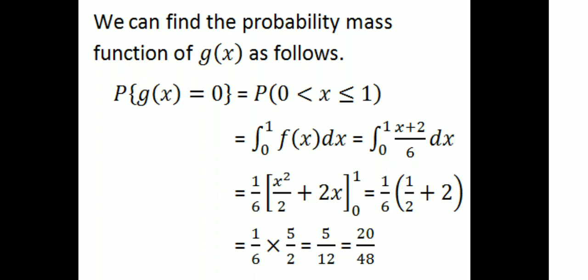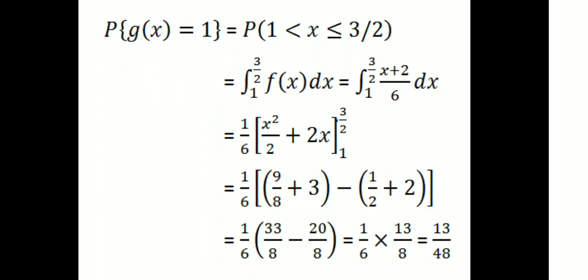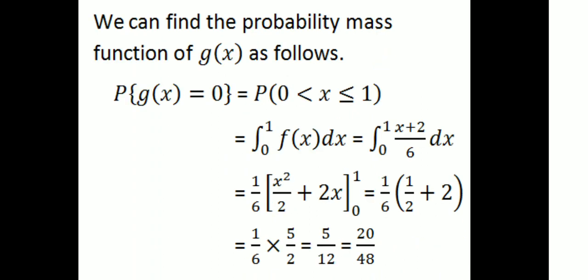P(g(x) = 0) = P(0 < x ≤ 1) = integral from 0 to 1 of f(x) dx = integral of (x+2)/6 dx = (1/6)[x²/2 + 2x] from 0 to 1 = (1/6)(1/2 + 2) = (1/6)(5/2) = 5/12 = 20/48. Then P(g(x) = 1) = P(1 < x ≤ 3/2), which gives 13/48. We convert 5/12 to 20/48 to use a common denominator of 48.